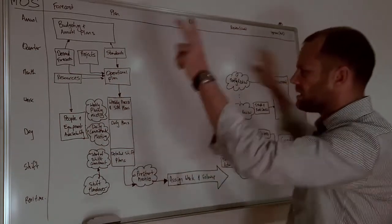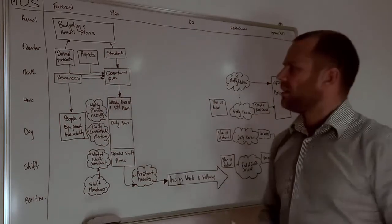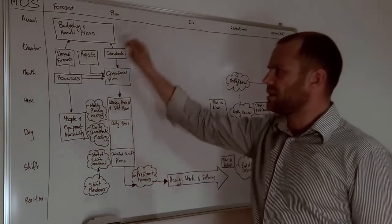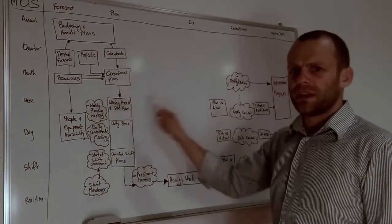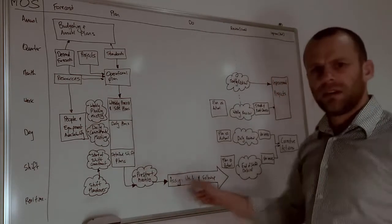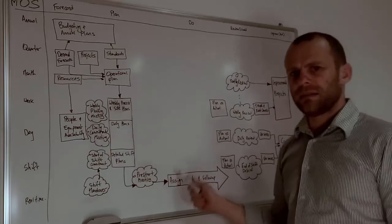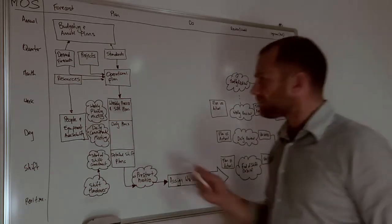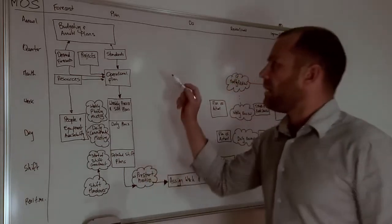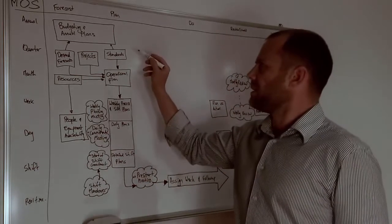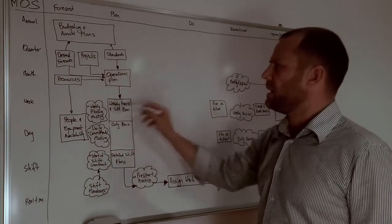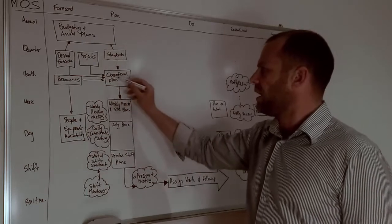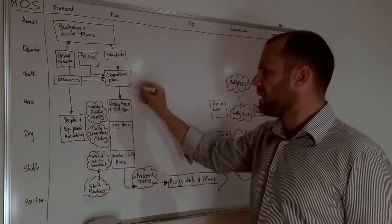It's important that what this does is it shows the process by which you connect the intentions and the plans of the management team with the work that happens in the front line to make the product or service that that business is responsible for doing for its customers. Up here we've basically got the budgeting and the medium term, long term planning process and it all comes back to an operational plan at about the monthly level.